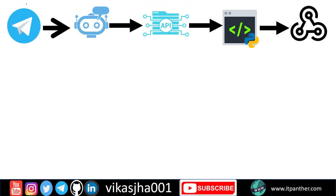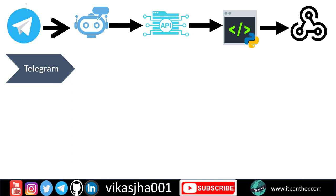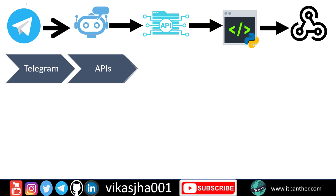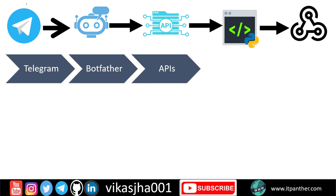First thing which we need here is we need Telegram. Obviously if you want to create a conversational bot using Telegram, you should have a Telegram ID and then you also need to create a bot using Telegram BotFather. Using BotFather is very easy. After that we are going to make use of Telegram APIs which are already openly available.